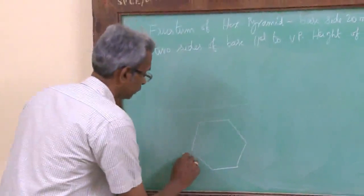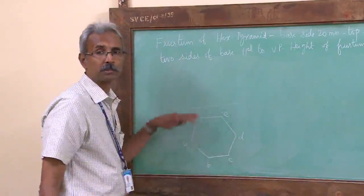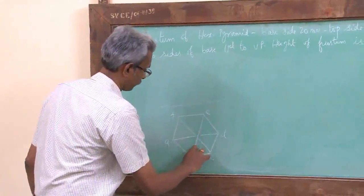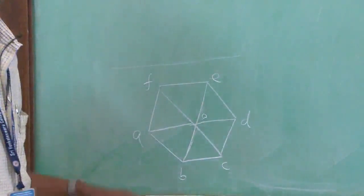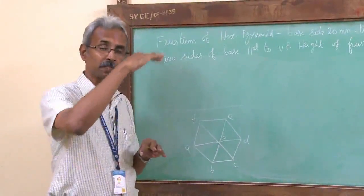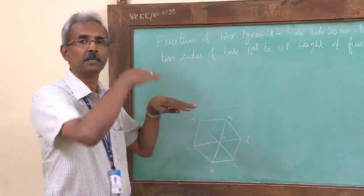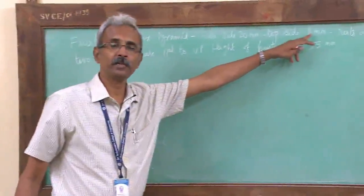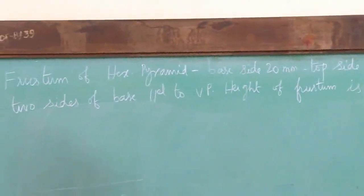This is the top view of the hexagon. We name and join all the corners because this is a pyramid. This is the base of the pyramid, and since it is a frustum, we have cut the top portion. The shape of the top of the frustum will also be a regular hexagon — but of reduced size — since the cut is parallel to the base. The top edge is given as 8 mm. Now we draw the top view of the top portion of the pyramid.